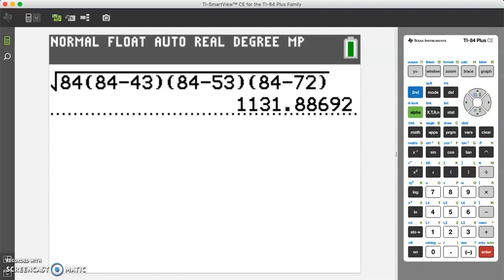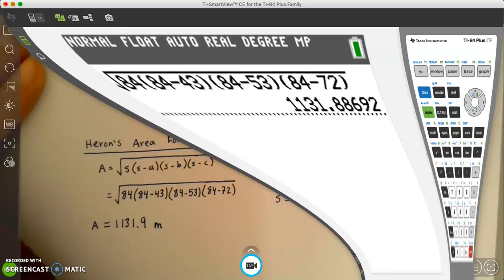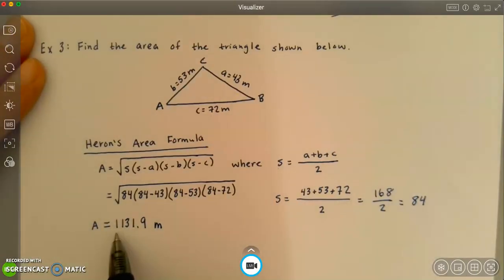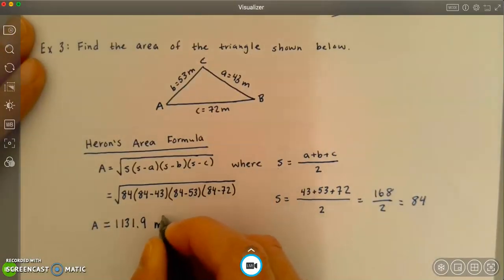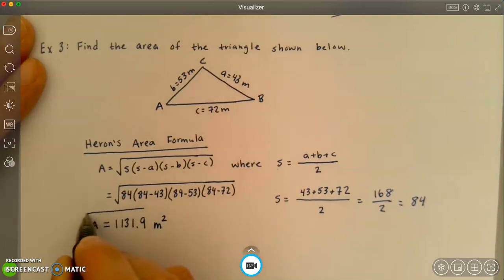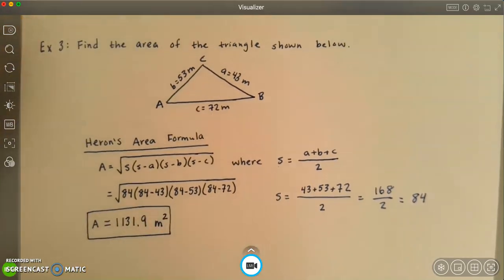So once again, we know that when we square root something, we have plus or minus, but if we're looking for the area of something, we do not want the negative value. So we're only going to consider the positive value. So the area of this triangle is approximately 1,131.9, and our unit is meters. Don't forget, any time that you are looking for area, we want to square the unit. So that is the approximate area of this triangle.